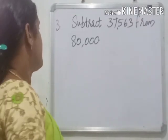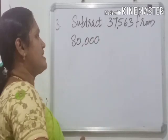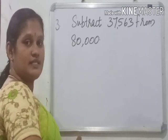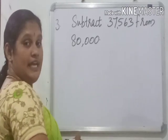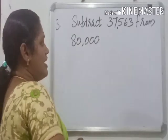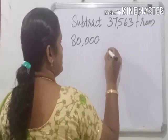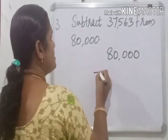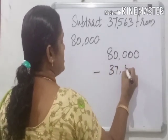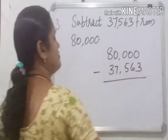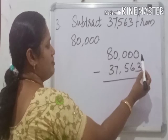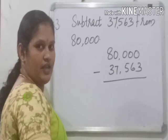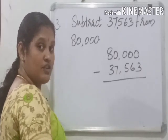Next, example 3: subtract 37,563 from 80,000. Which is the biggest number? 80,000 is the larger number, so we write 80,000 minus 37,563. Starting subtraction from the units place: 0 minus 3. Can we subtract 3 from 0? No.